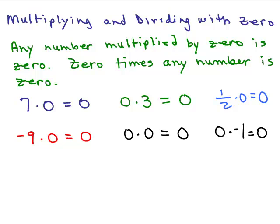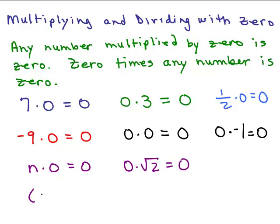So you get the hang of it? If one of the numbers is zero and you're multiplying, the answer is going to be zero. This works even if you have a variable like n times zero — that's also zero. Or if you've ever heard of square roots, zero times the square root of two is also zero. It doesn't matter what you're multiplying — zero times something or something times zero — you keep getting zero. If you have a bunch of stuff and you're multiplying by zero, the answer is going to be zero.